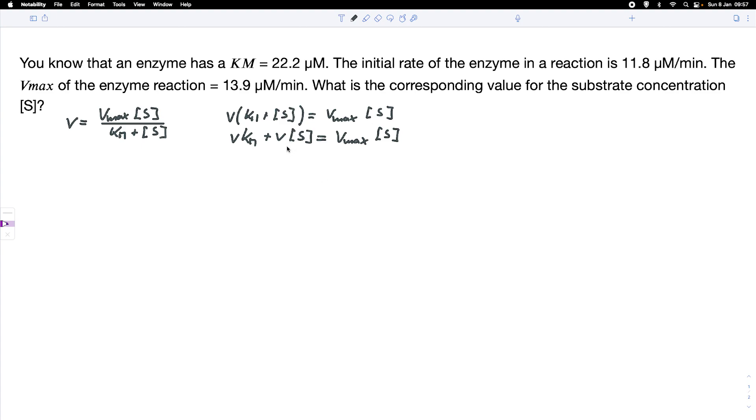Now we bring everything with substrate concentration to one side. We just bring this part to this side over here. It's just simple algebra. So we have VKM equals Vmax times S minus V times S.